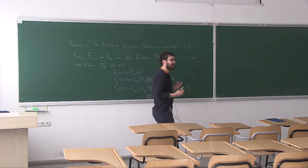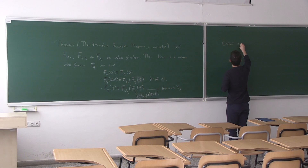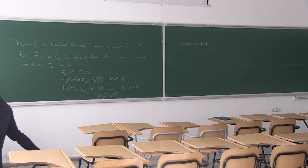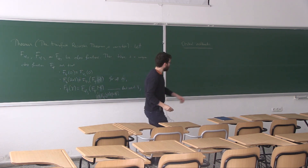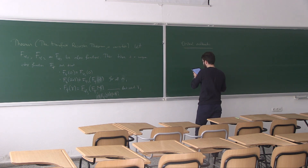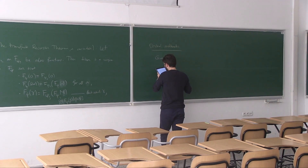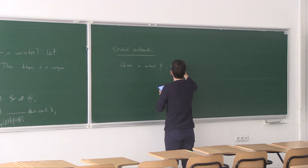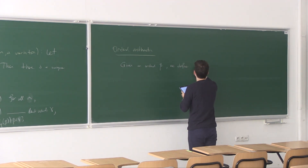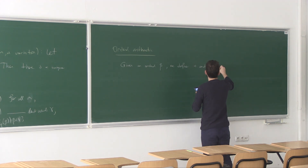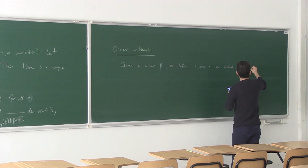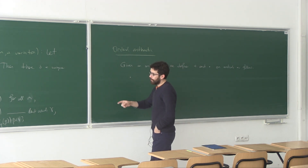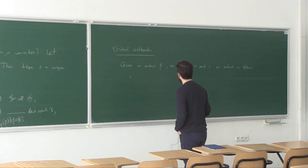Using this variation, let's define arithmetic on ordinal numbers. Let's start by defining addition — or let me do addition and multiplication at the same time. Given an ordinal β, we define addition and multiplication on ordinals by transfinite recursion. I should tell you what to do at zero, at successor ordinals, and at limit ordinals.